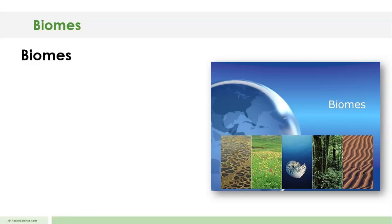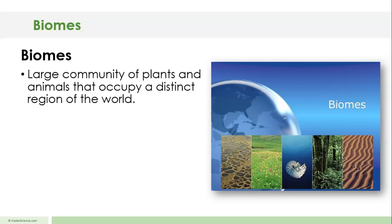What exactly are biomes? You're going to need your fill-in-the-blank note sheet here. Essentially, the definition of a biome is a large community of plants and animals that occupy a distinct region of the world. There can be many ecosystems within one single biome, but typically there are some similarities between those ecosystems.